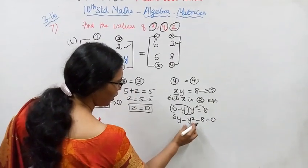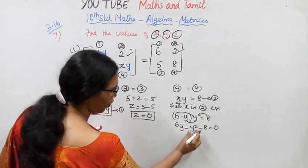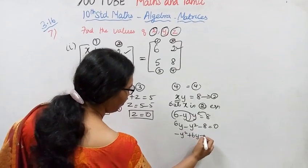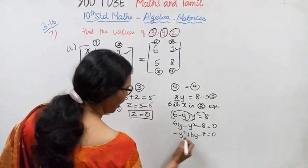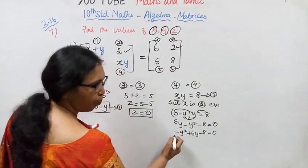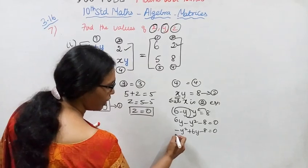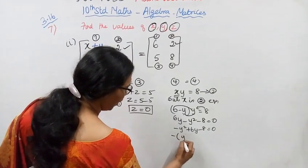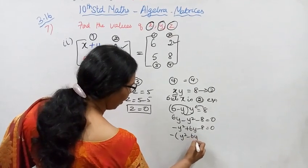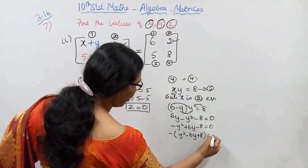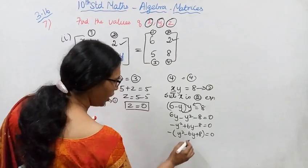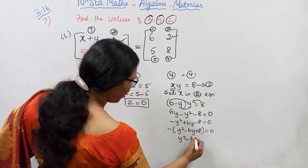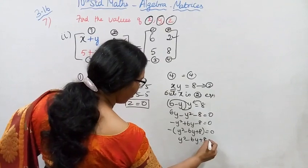Expanding gives the quadratic equation: minus y squared plus 6y minus 8 equal to 0. Multiplying through by minus one, we get y squared minus 6y plus 8 equal to 0.